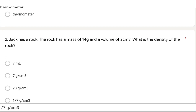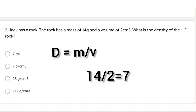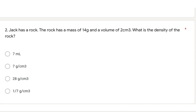In the second question, Jack has a rock with a mass of 14 grams and volume of 2 centimeter cubed. What is the density of the rock? As we know, the formula for density is mass divided by volume. So it will be 14 grams divided by 2 centimeter cubed, and the answer will be 7 grams per centimeter cubed.